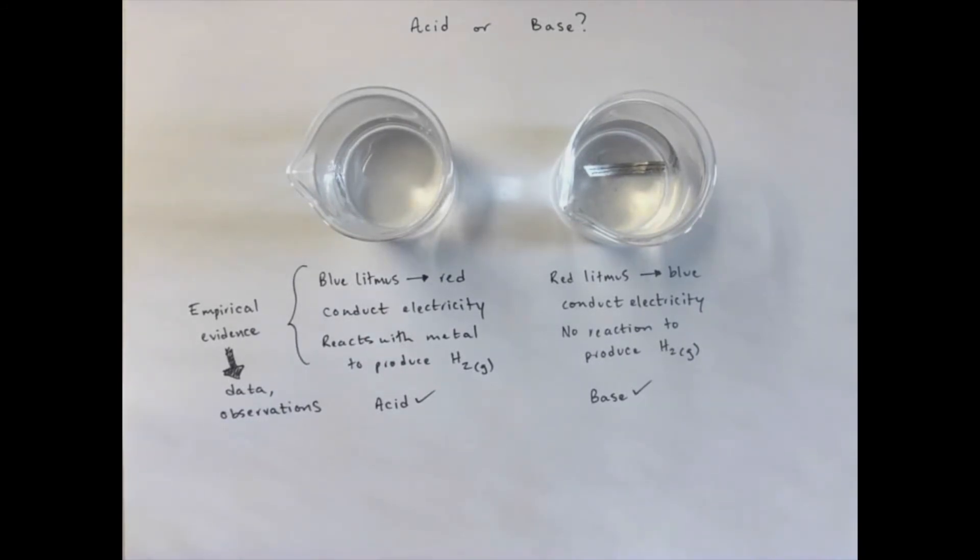There's a few more empirical properties we can look at for acids and bases that I've included in the slideshow. But I just want to land here in saying that empirical evidence, which is data, observations, measurements, are the things that we can measure in a lab that we can see with our own eyes. We don't really stop there, though.